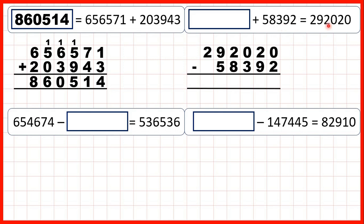So here we need to work out 292,020 minus 58,392. We've lined the digits up on the right-hand side. 2 is larger than 0, so we need to go to the left, 1 less 1 in front, and 10 minus 2 is 8.